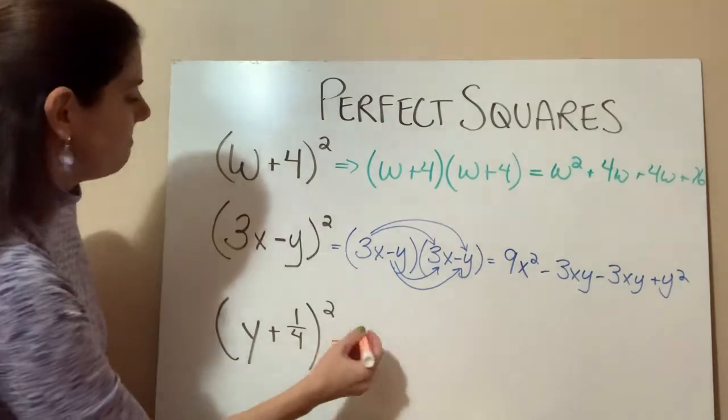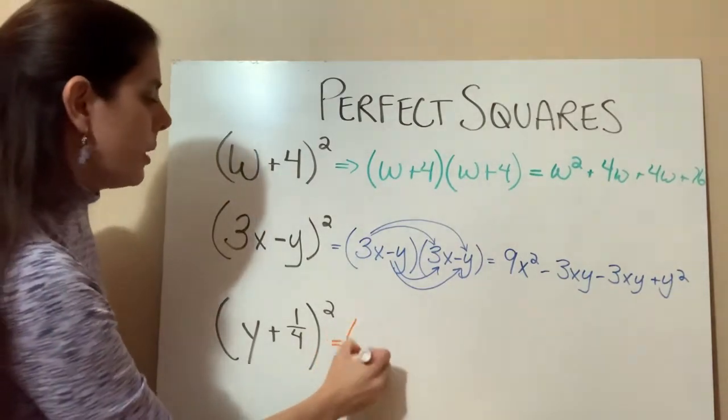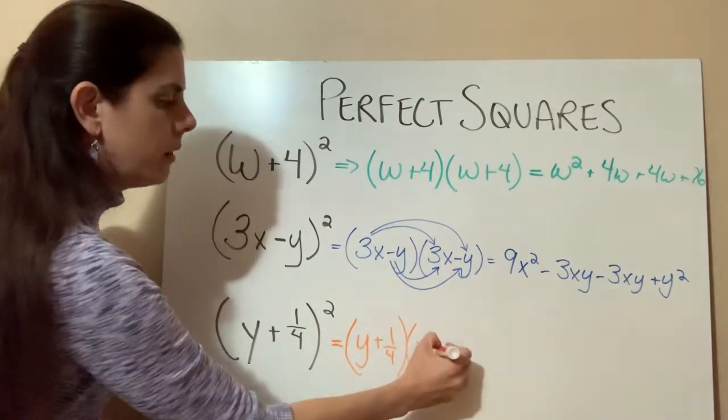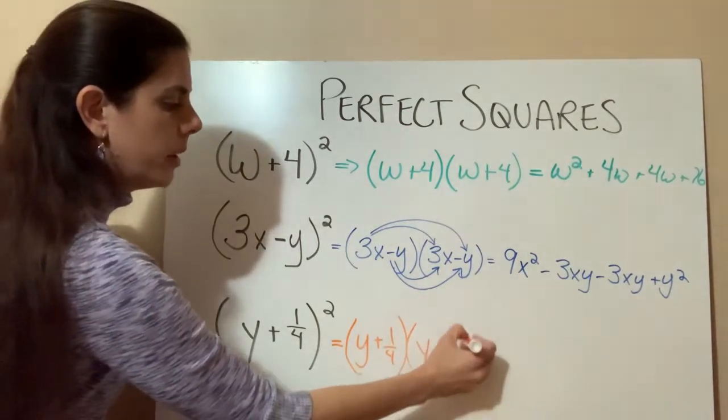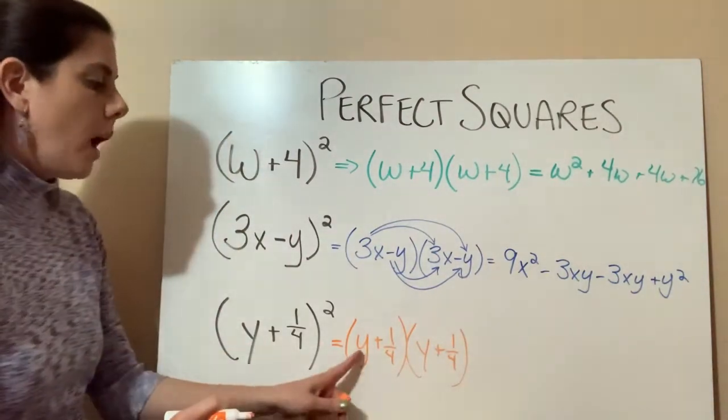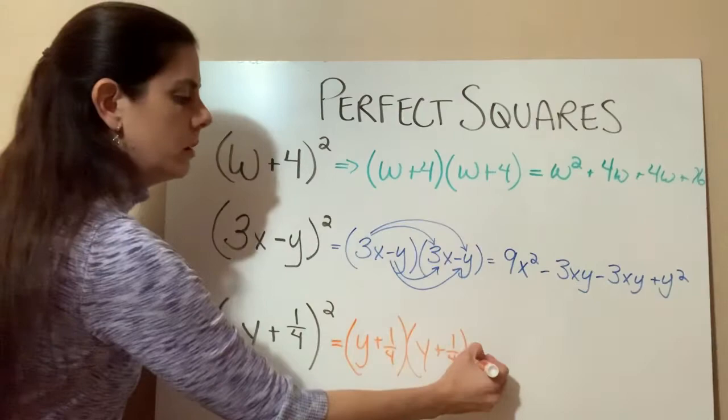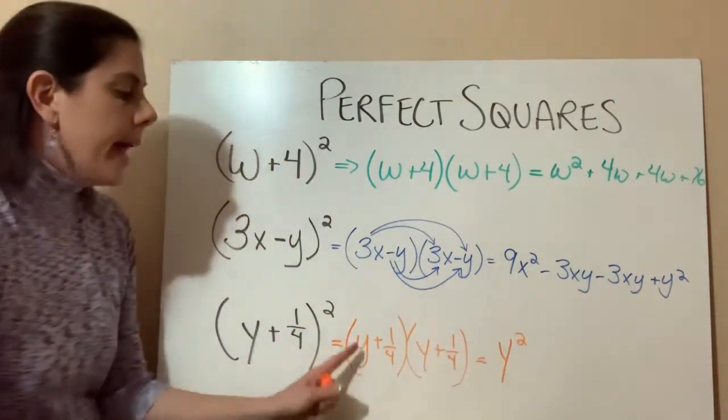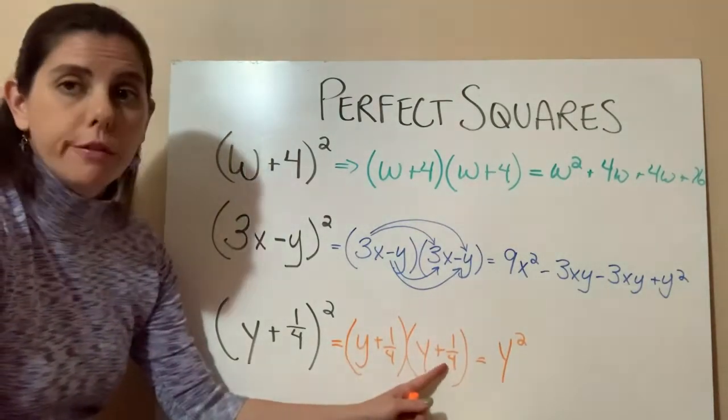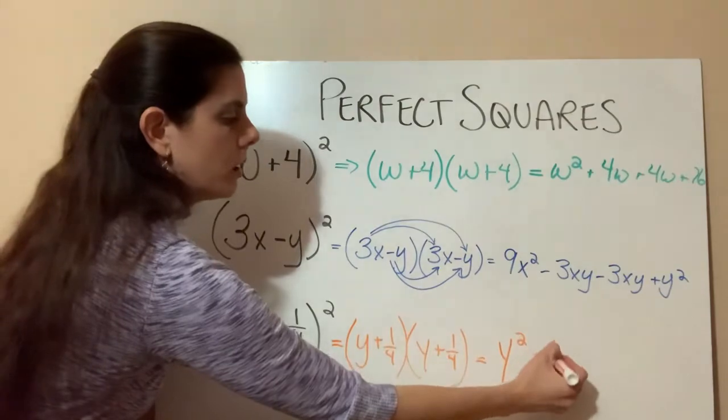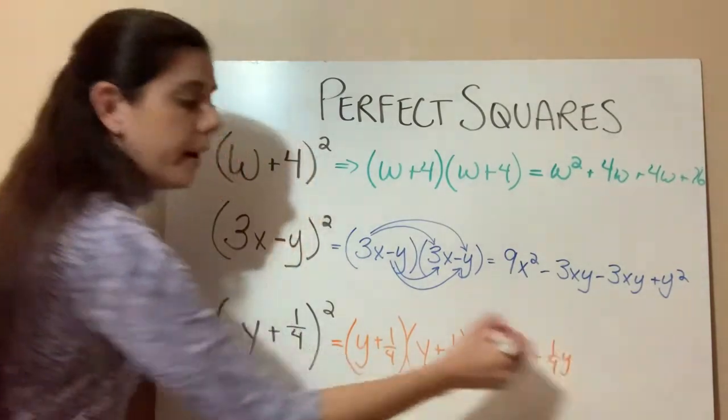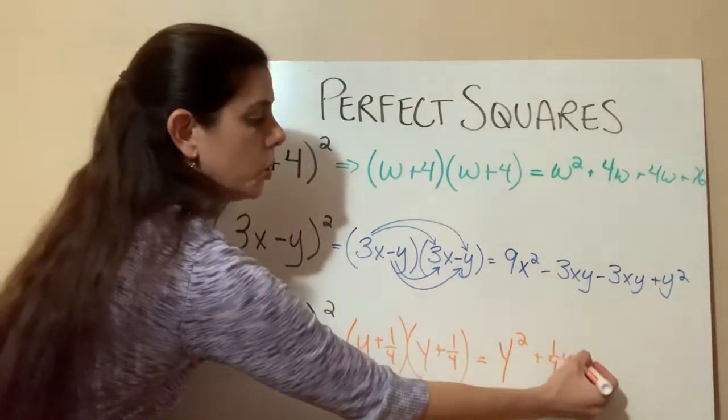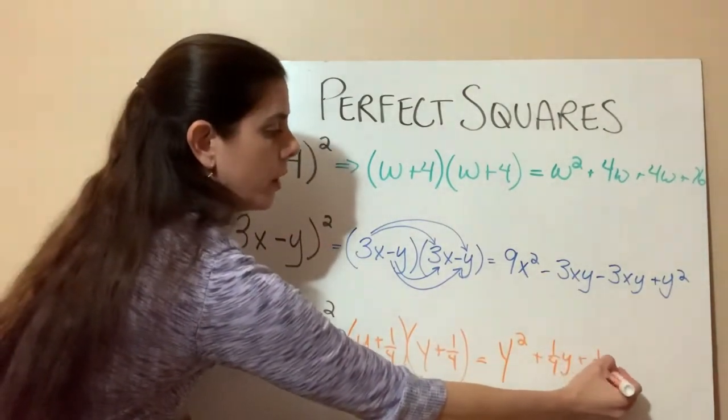So let's do our last one. We'll do a fraction together. So we're going to rewrite this as y plus one-fourth times y plus one-fourth. So y times y equals y squared. And now we're multiplying y times one-fourth. So isn't that just going to be one-fourth y? And then our second one is going to be one-fourth times y, which will be another one-fourth y.